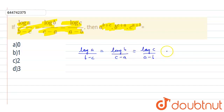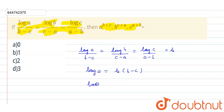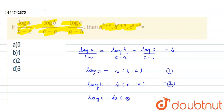Let's suppose this is equal to constant K. Now from here, if I find the value of log A, then what we get: log A = K(B−C). This term is multiplied with K. And from here, log B = K(C−A). Let's suppose this is equation number 1, this is equation number 2. And log C = K(A−B). Let's suppose this is equation number 3.